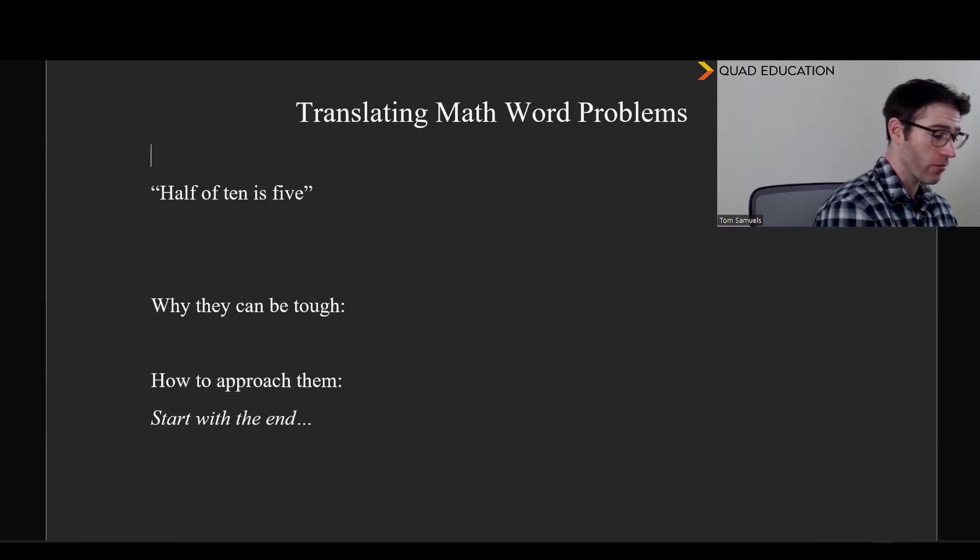So the first one here is just very straightforward. Half of 10 is 5. We absolutely know what that means, right? Half of 10 is definitely 5. But what we need to do is turn this into math, because when we get to our word problems later with more words than this, it's not going to be quite as straightforward. So, we know how to express half as math, right? That's just 1 over 2.